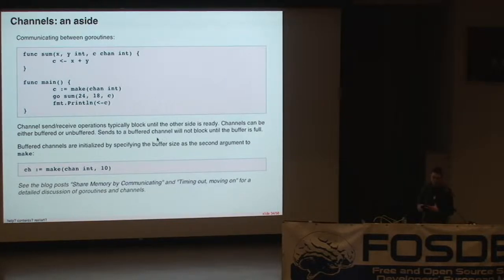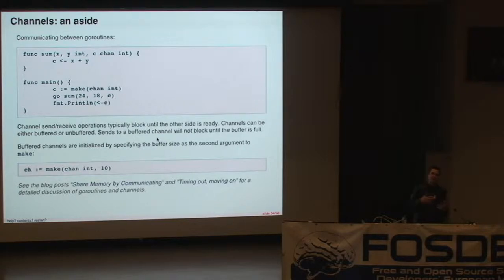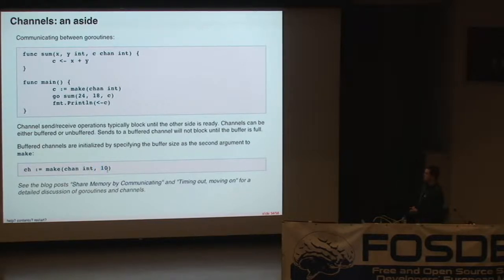Here's an example of communication between goroutines. In main, we create a channel of integers, launch a goroutine calling sum, passing some arguments followed by the channel c. In the body of sum, we add x and y and send that value down c. Back in our main function, we receive the value from c and print it. This send to c will wait until the receive from c is ready — a very powerful synchronization primitive. Channels can be buffered or unbuffered. If you make a channel buffered, sends to that channel will not block until the buffer is full. To make a channel buffered, you add a second parameter to make which is the size of the buffer. This channel of integers will store 10 integers before it gets full.